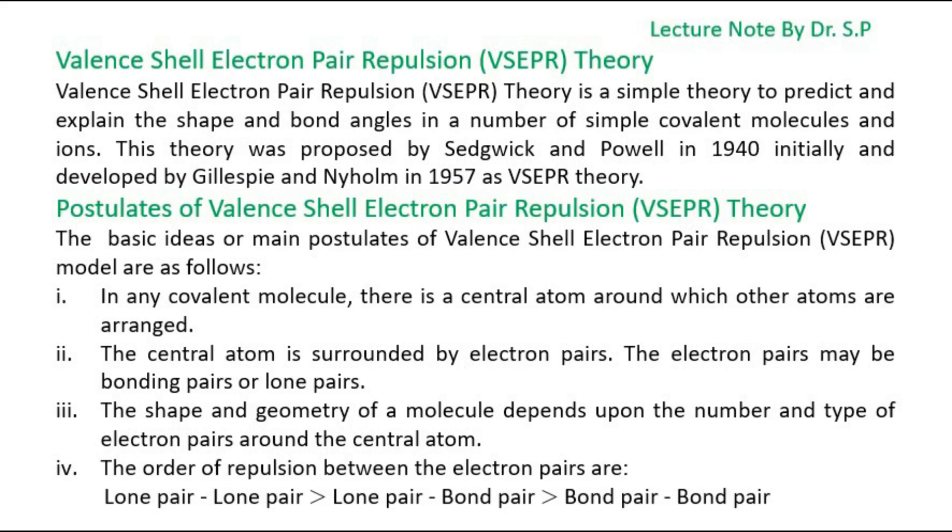The order of repulsion between the electron pairs are: Lone pair-Lone pair is greater than Lone pair-Bond pair is greater than Bond pair-Bond pair.